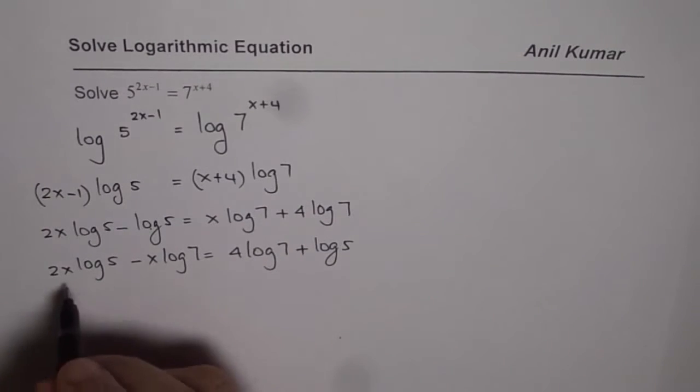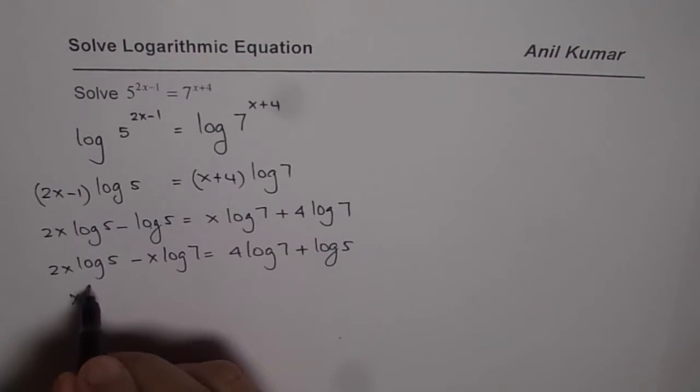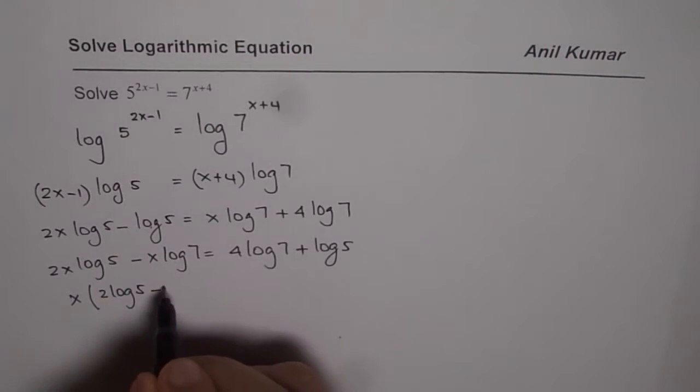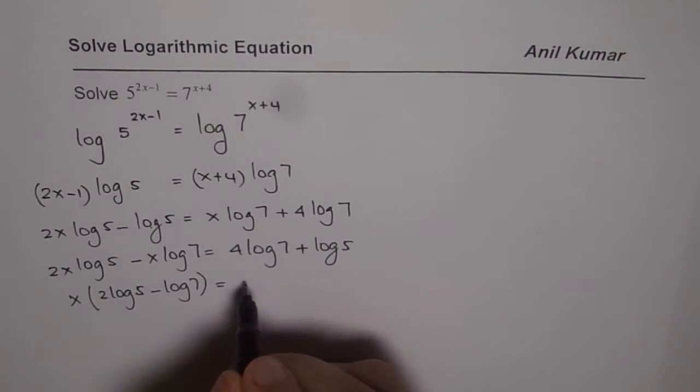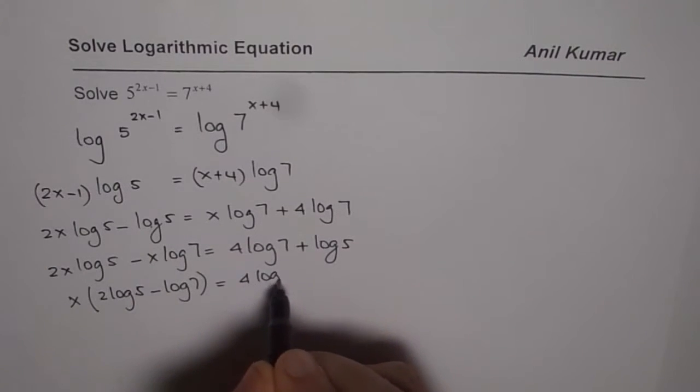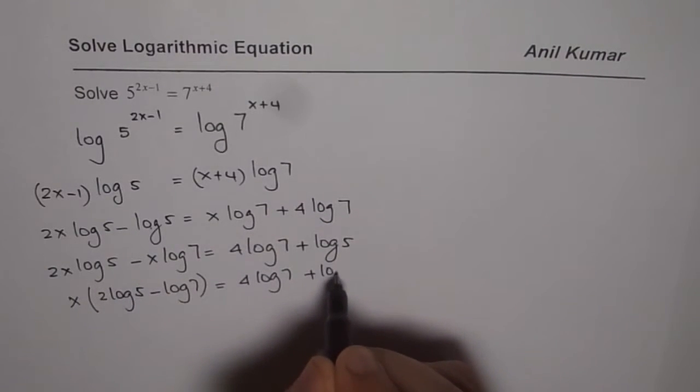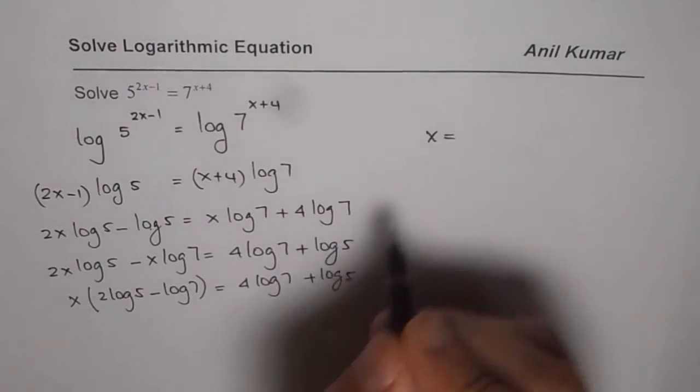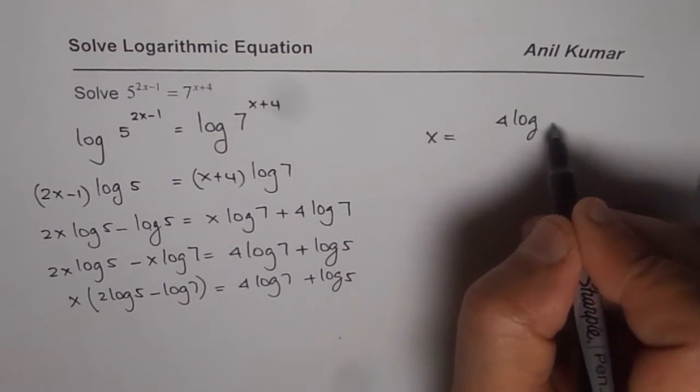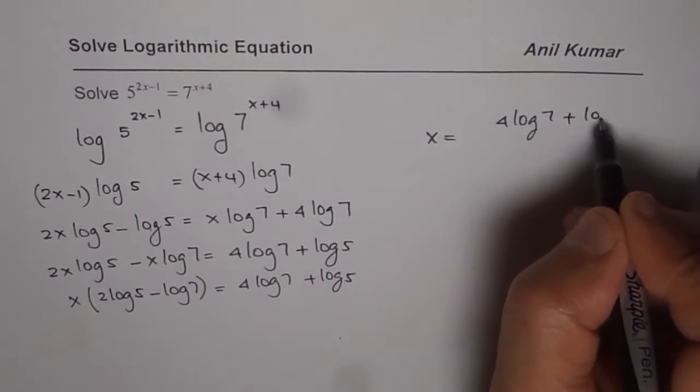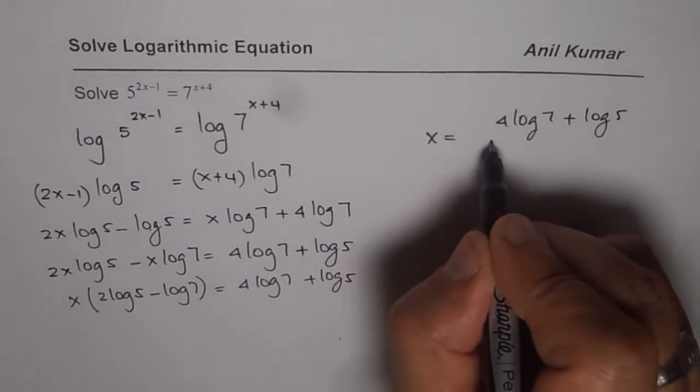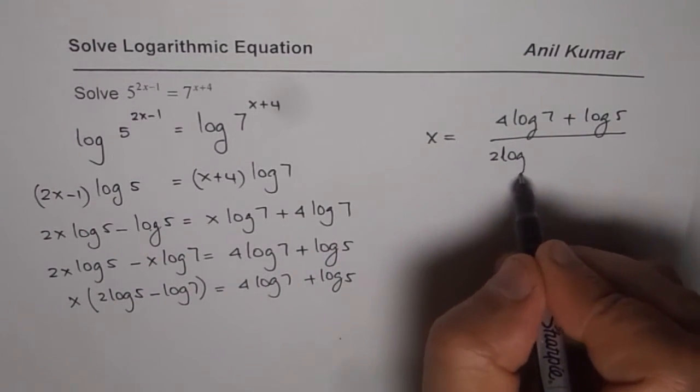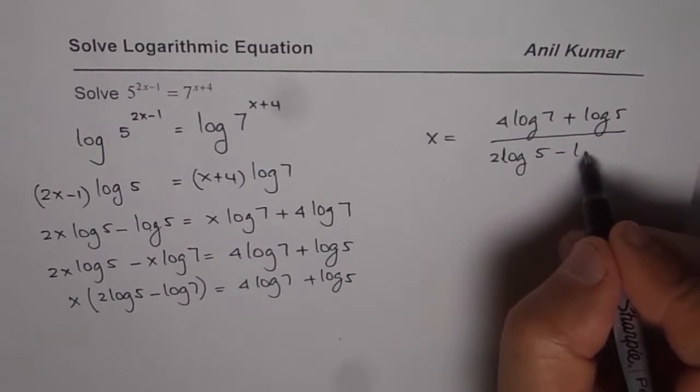Now we can take x common here. So we get x times 2 log 5 minus log 7 equals to 4 log 7 plus log of 5. Now we can write our answer as x equals to 4 log of 7 plus log of 5 divided by 2 log 5 minus log 7.